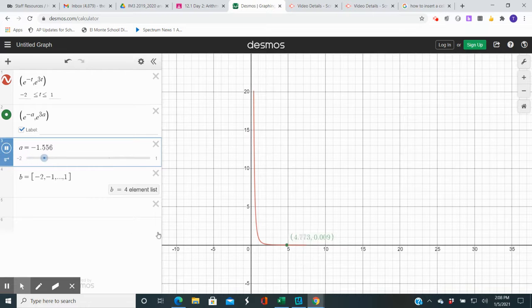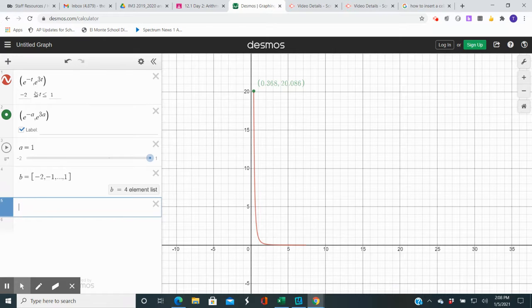If you'd like to label some points that are on the curve corresponding to various values of the parameter, you can have Desmos do that for you by entering a list. Here I'm using B, and B will be composed of negative 2, negative 1, 0, and 1. I have a list with four elements. And what you can do is you can enter your parametric equations again.